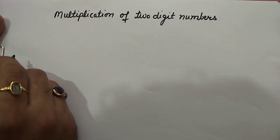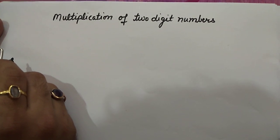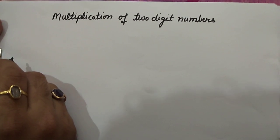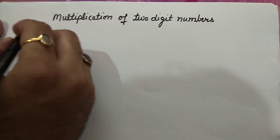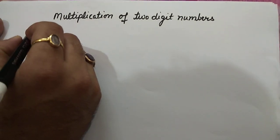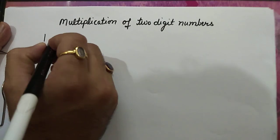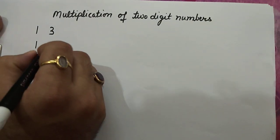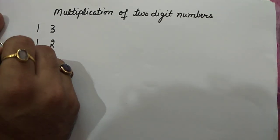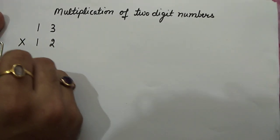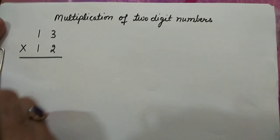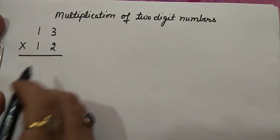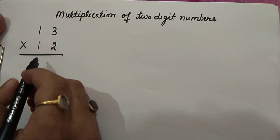Today we are going to study a new technique of multiplication of two-digit numbers. Let's take two numbers, 13 and 12. Let's suppose we want to multiply these two numbers. The new method is: